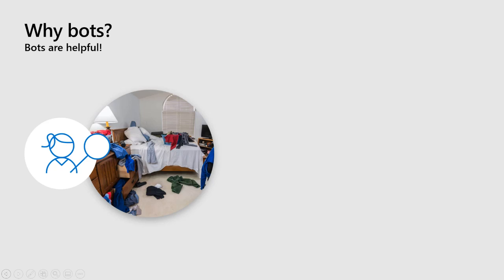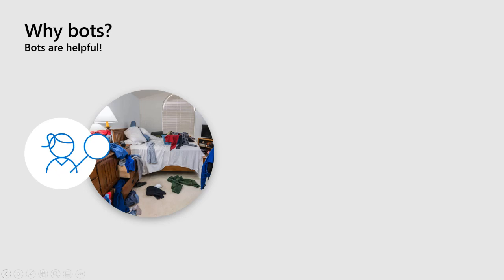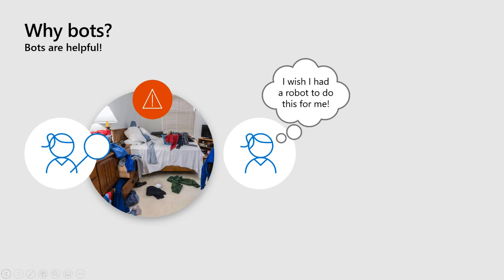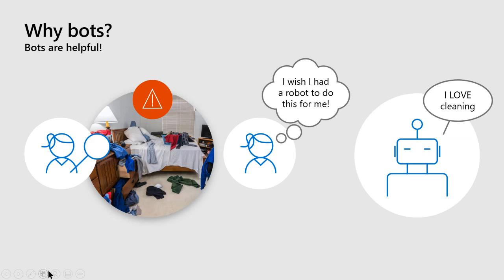Bots are there to help you with a specific task, and you're probably wondering: why would I want one? Let's think about a very basic example. Say your mom sees you have a very messy room and says, 'I need you to clean this room, please.' And you're like, 'I wish I had a robot to do this for me.' Imagine having a robot so you can save time playing video games, playing Animal Crossing, or programming. Bots save you time and they're helpful.